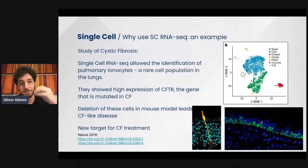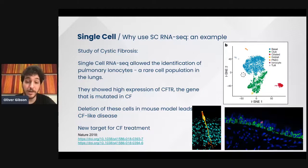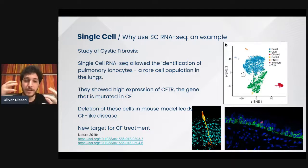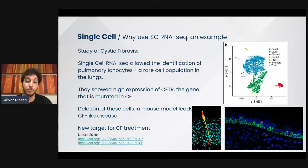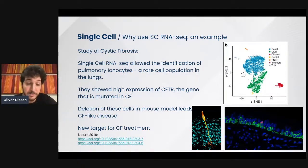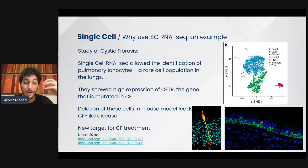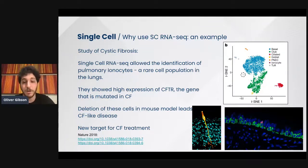The CFTR gene is the gene that is mutated in cystic fibrosis. This was a surprise because CFTR was supposed to be expressed in an average way by the ciliated cells of the lung. Single-cell RNA-seq data allowed them to discover a new population of cells expressing this gene, which was thought to be expressed averagely by other cells, and really allowed them to discover a possible new target for cystic fibrosis.